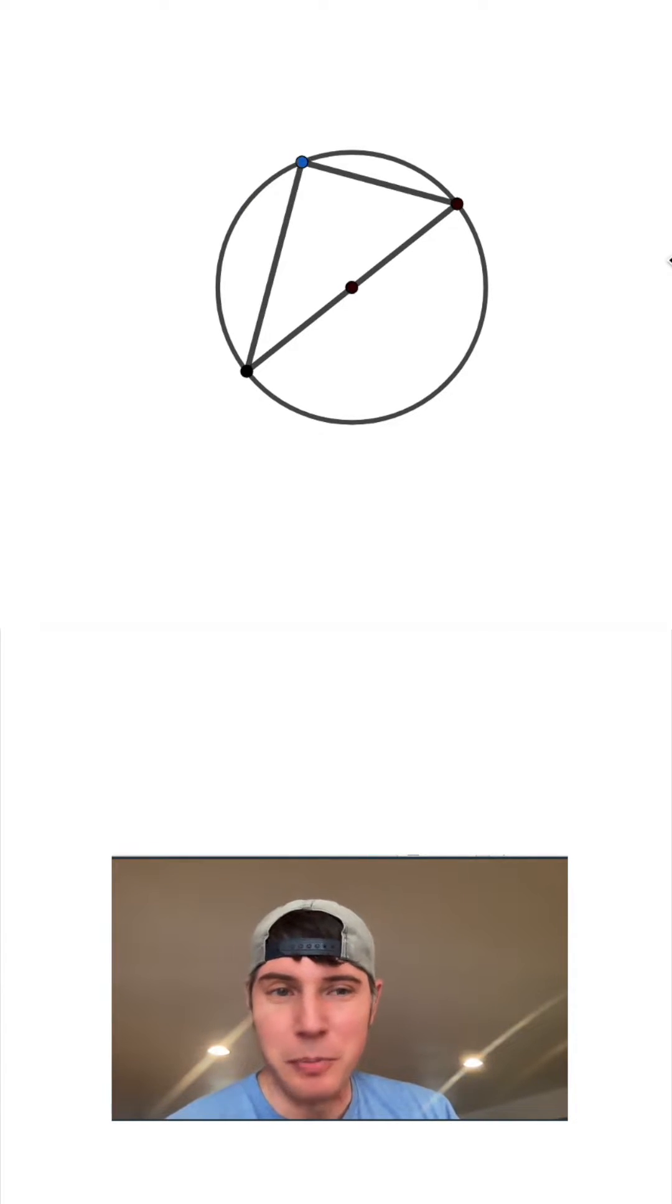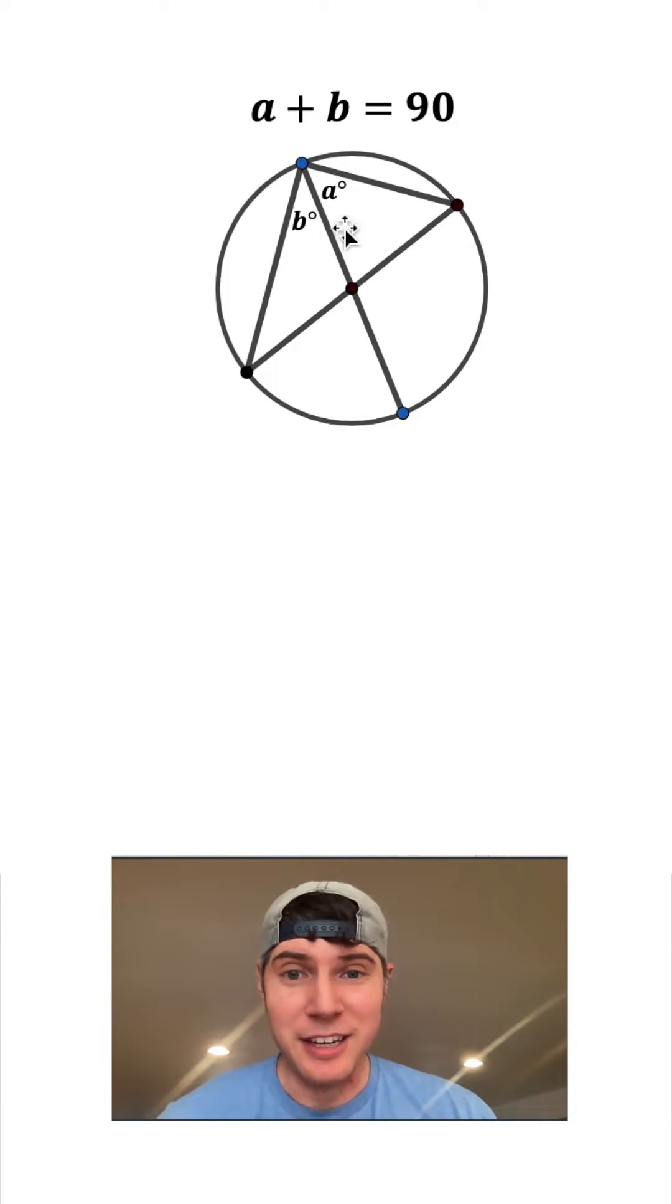Let's choose an arbitrary point like this. So all we have to do to prove it's a right triangle is prove that this angle right here is a right angle. First, let's draw the diameter from this vertex through the center to the other side of the circle. Let's call this angle right here A. I will call this angle right here B. I'm saying that A plus B equals 90. We'll put a question mark for now because we don't know for a fact that it's true.